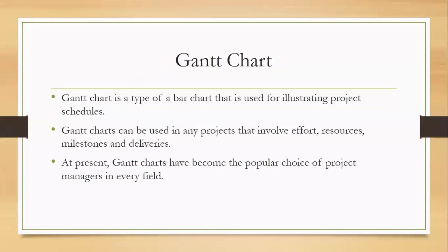The Gantt chart is a type of bar chart that is used for illustrating project schedules. There are so many schedules set out to complete one project. How the schedules will be managed, how the tasks will be performed, and how much of the task has already been performed and how much is left — the ratio will be mentioned over this chart in a bar chart format.